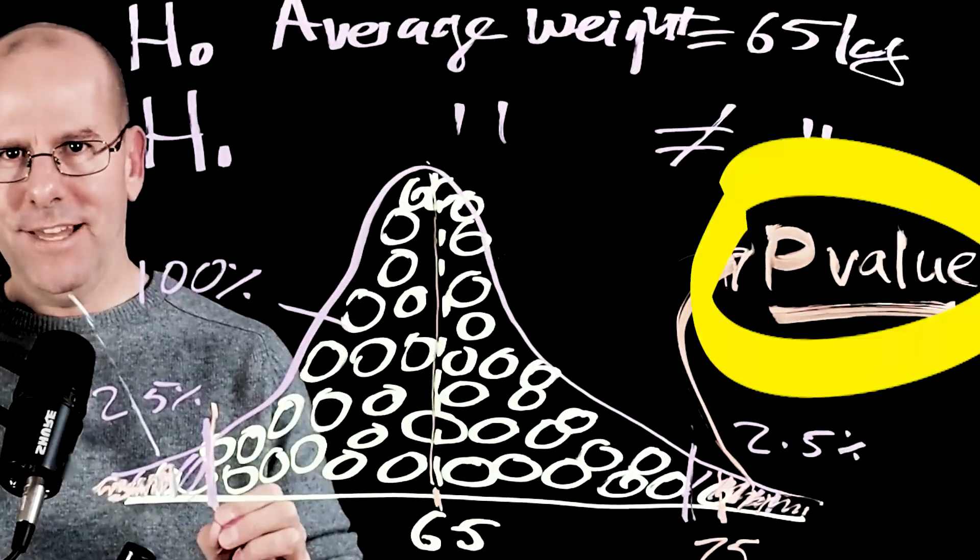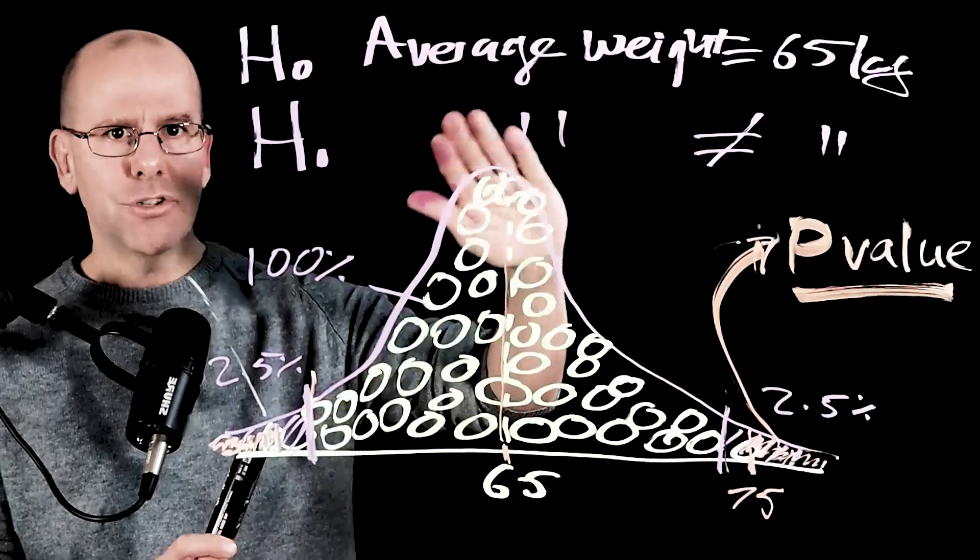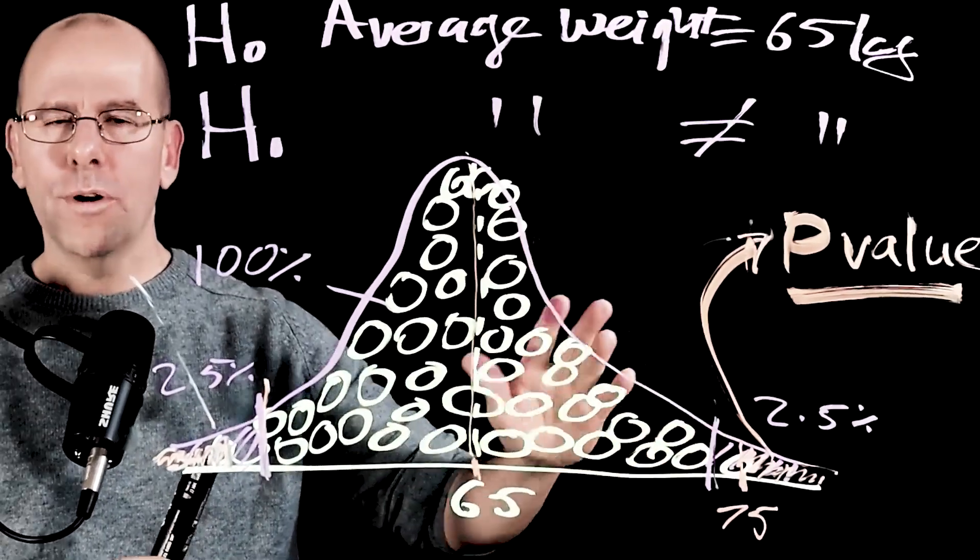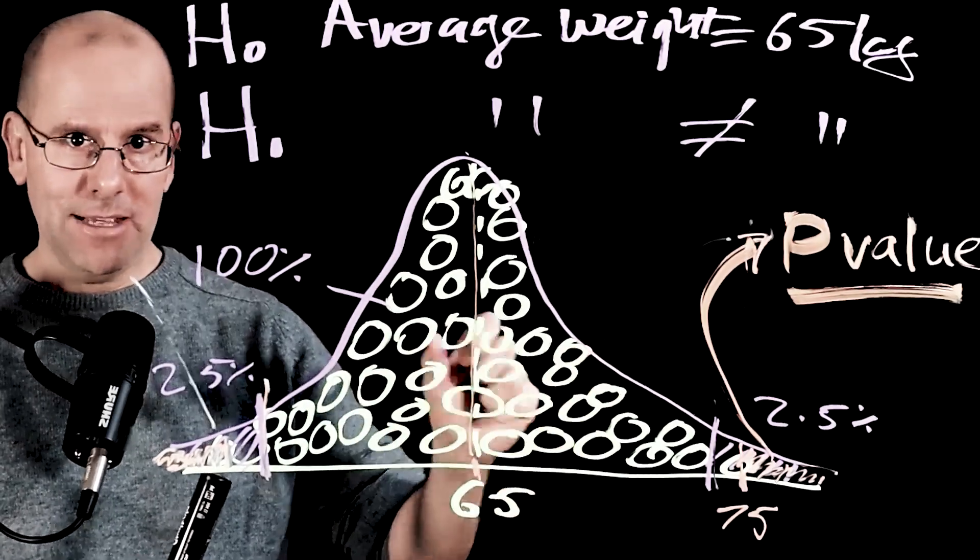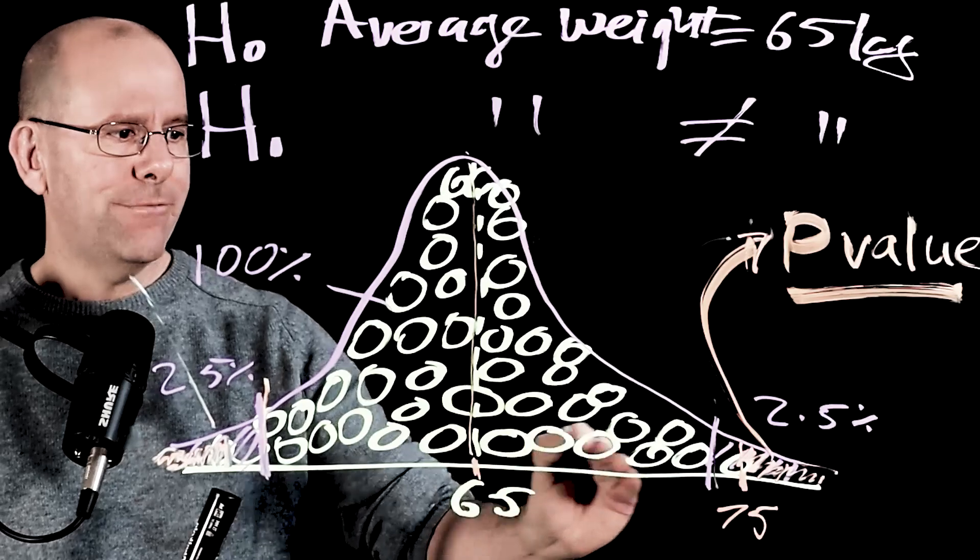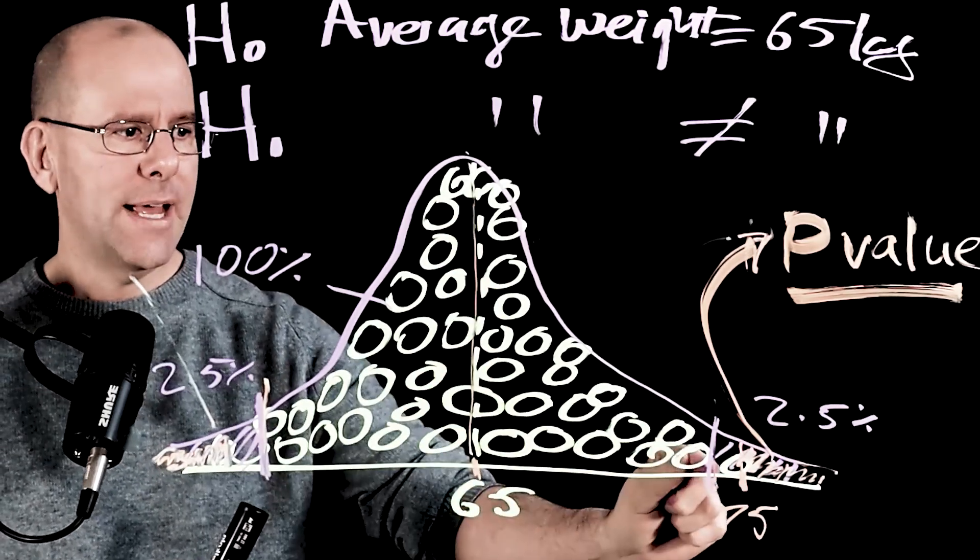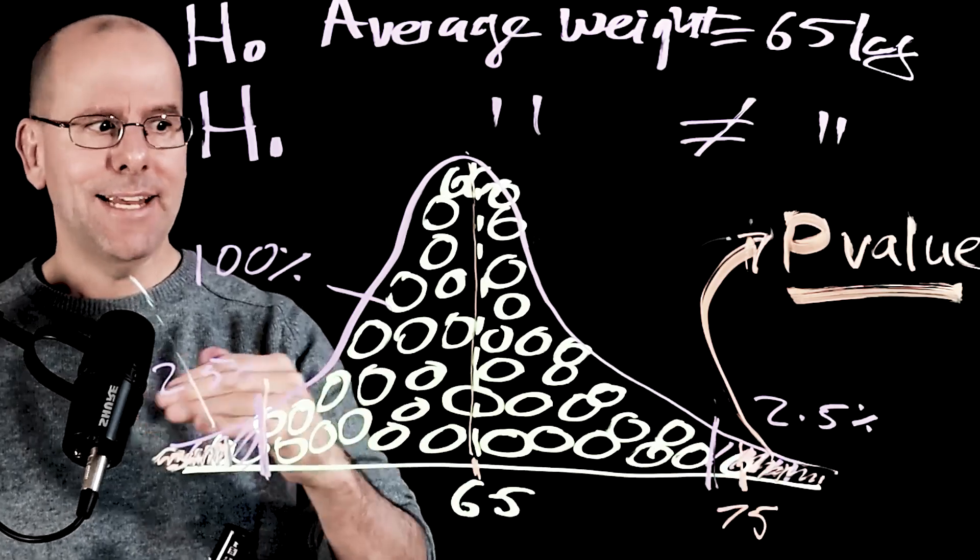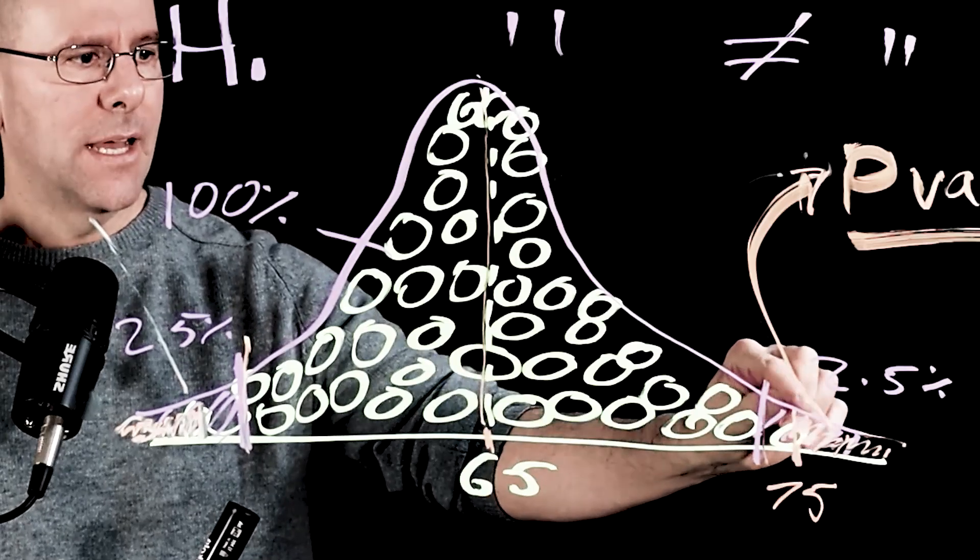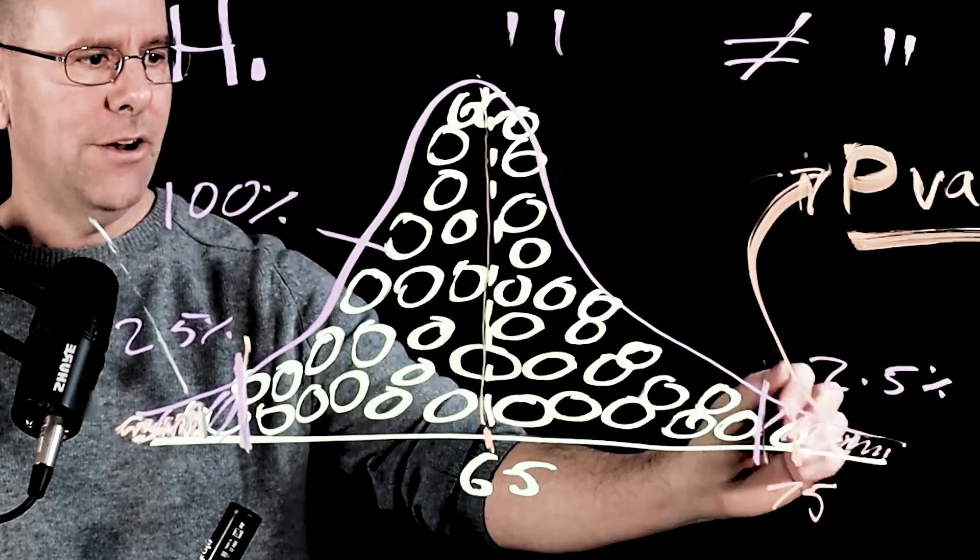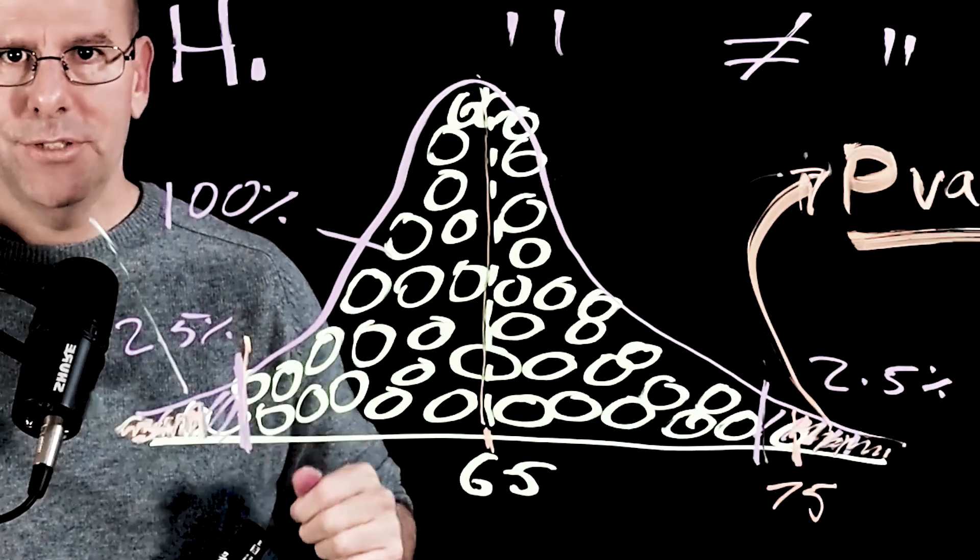So what is the p-value? The p-value is assuming that the null hypothesis is true. This is the distribution of samples that you'd expect. What are the chances? What is the probability that you would get a sample, a random sample from the population that's that far away or further from the middle? And it's that far away or further in either direction. That's why we color in and basically the area under the curve is the probability. We use the shaded area from that point onwards in both directions. That's your p-value.